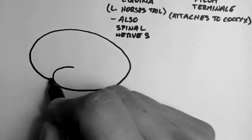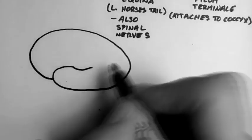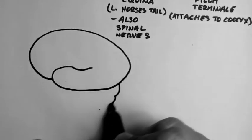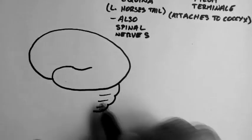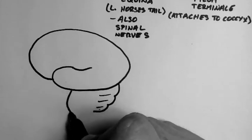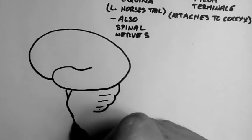Now let's have a look at the other two parts of the CNS. Here's a brain from the side, and the front of the brain is to the left.